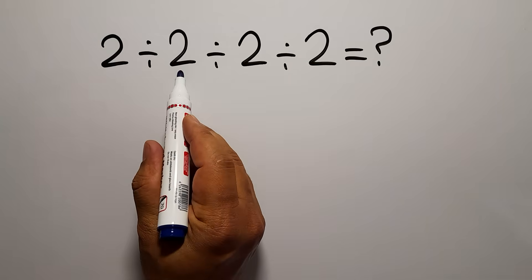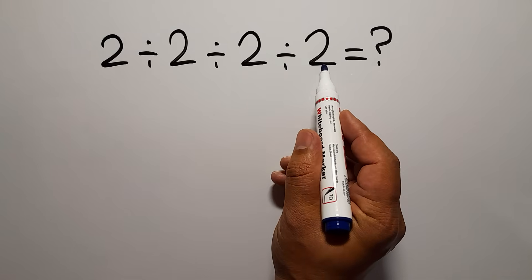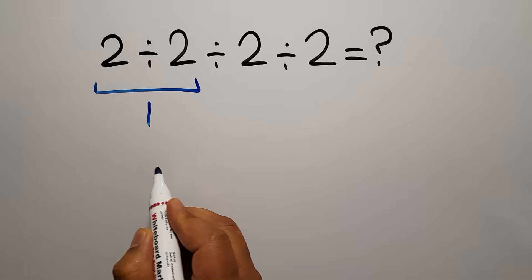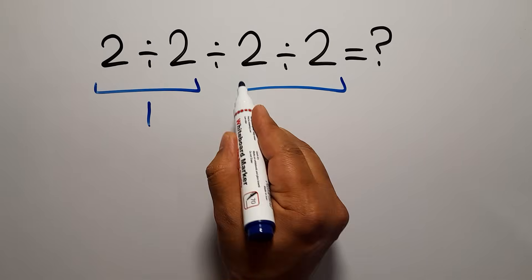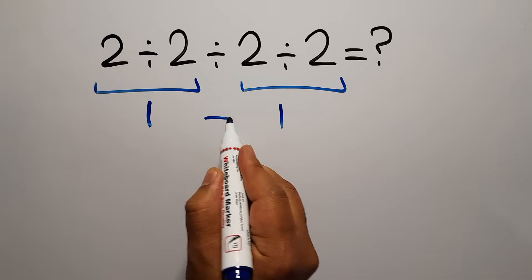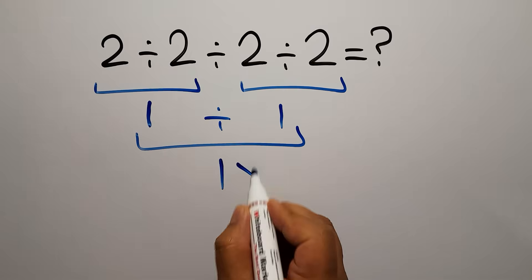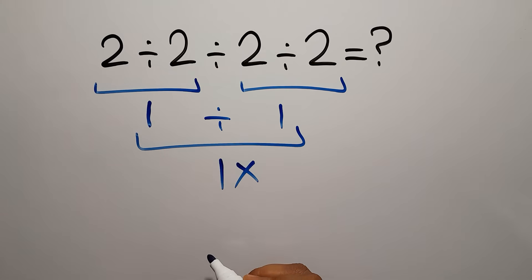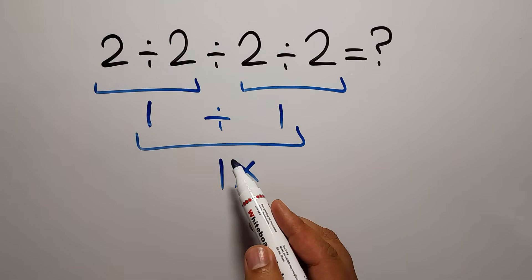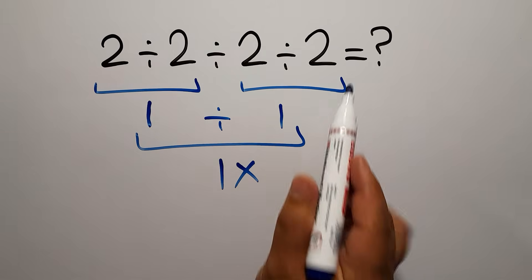2 divided by 2 divided by 2, and again divided by 2. 2 divided by 2 gives us 1, and again 1, so 1 divided by 1, which is just 1. But this answer is not correct, because when we have more than one division in one expression, we have to work from left to right.